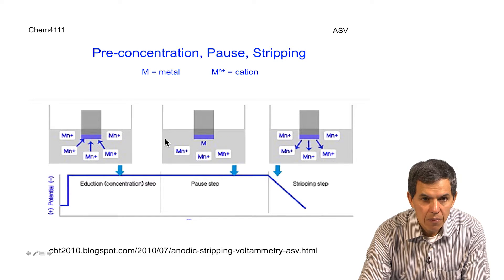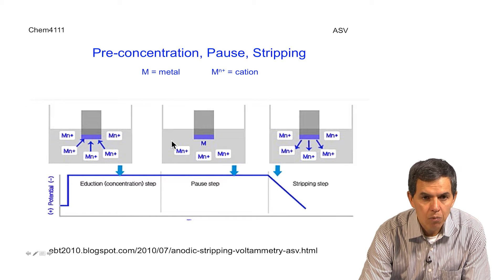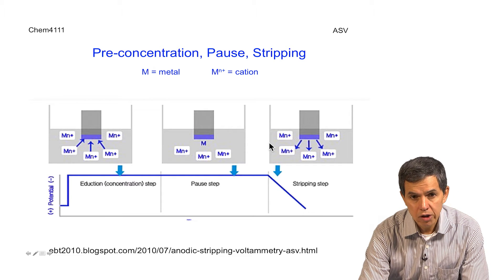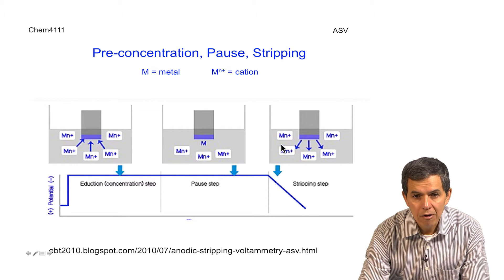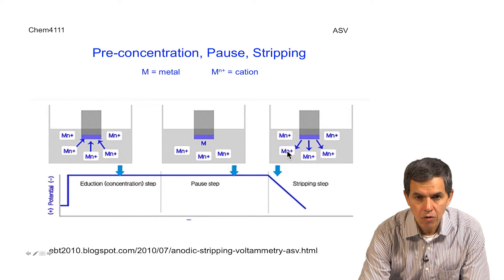In the second step, we have a pause that basically stops all stirring and movement of the solution so that a new equilibrium is established nearby the electrode. And the third step consists of reversing the potential of the electrode so that the metal gets released out onto the solution.